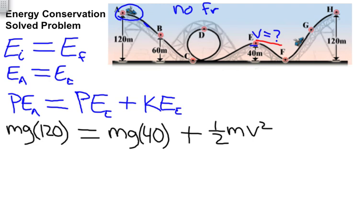Right off the bat, we see that we can divide both sides by m, and the m's cancel. We also know what the acceleration of gravity is, and it's 10 meters per second squared. We will round to 10 so we can work this out on the board. And so we get 120 times 10, which is 1200. And that equals 40 times 10, which is 400, plus one-half v squared.